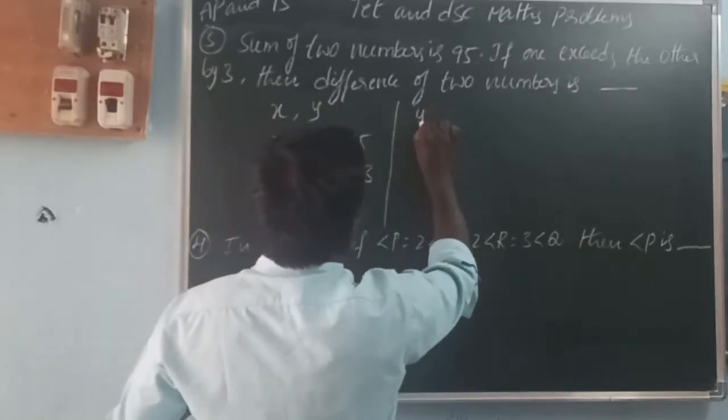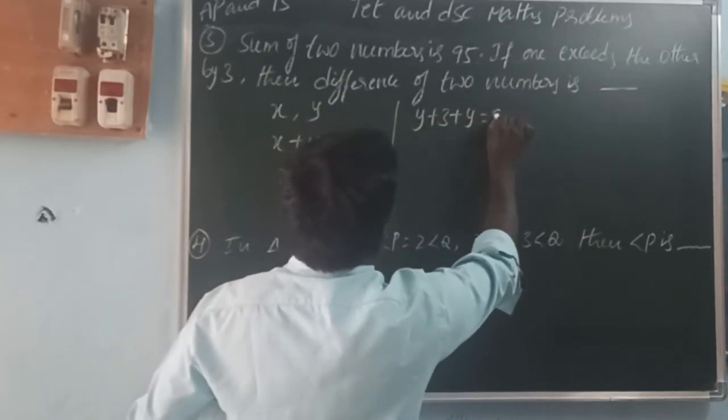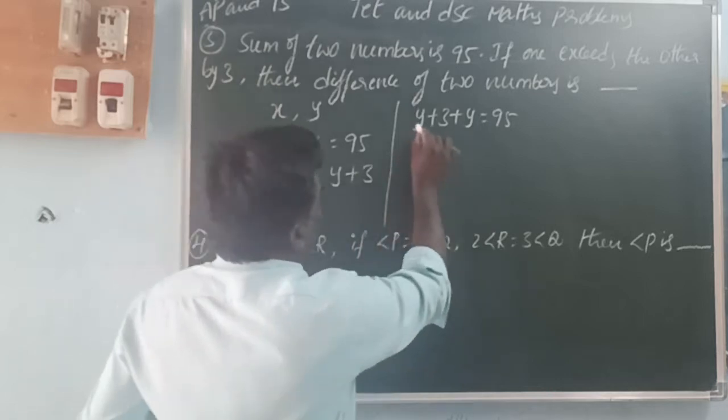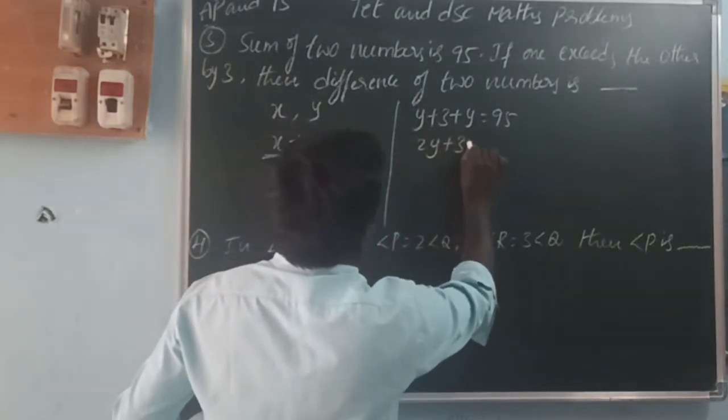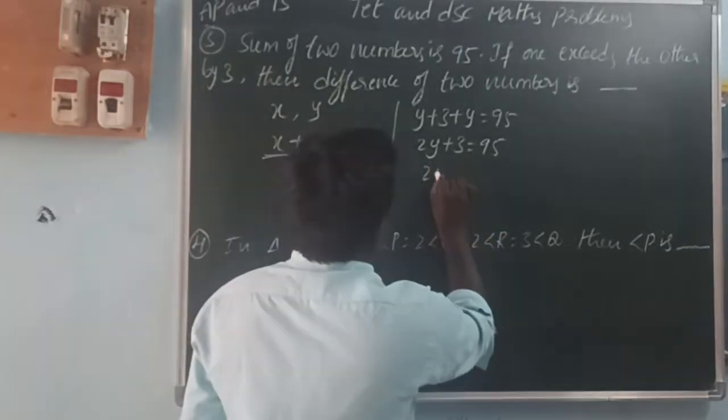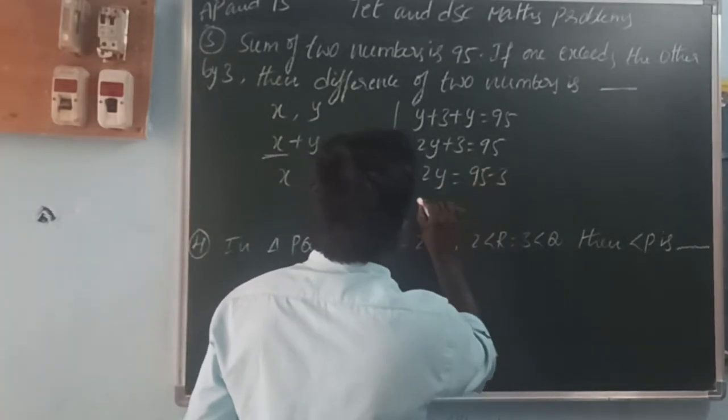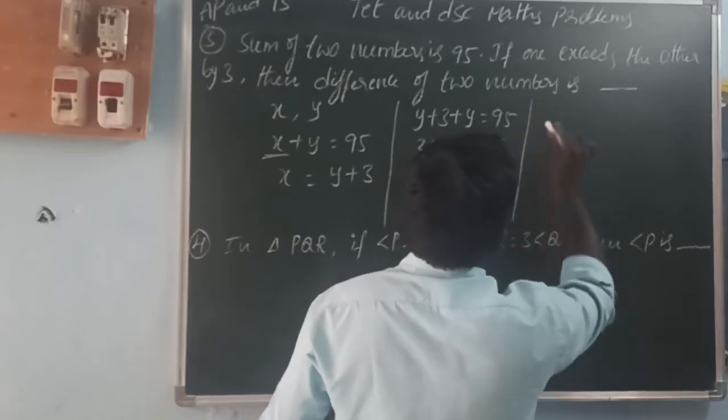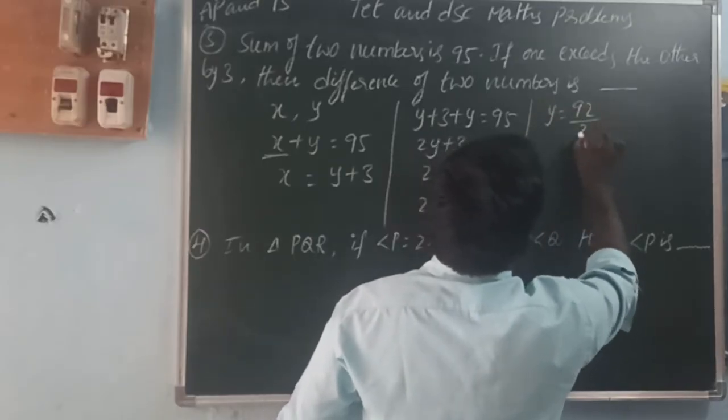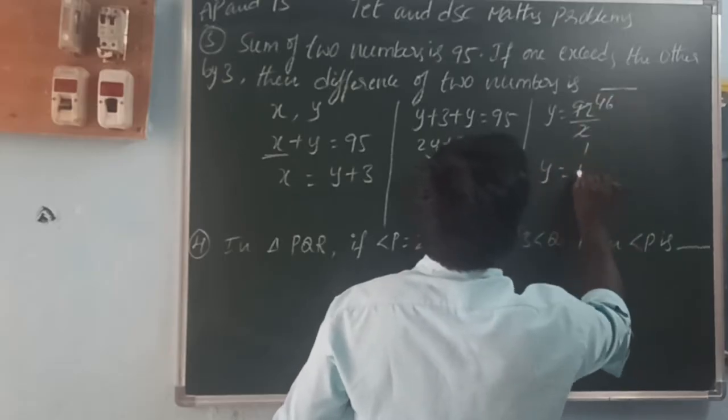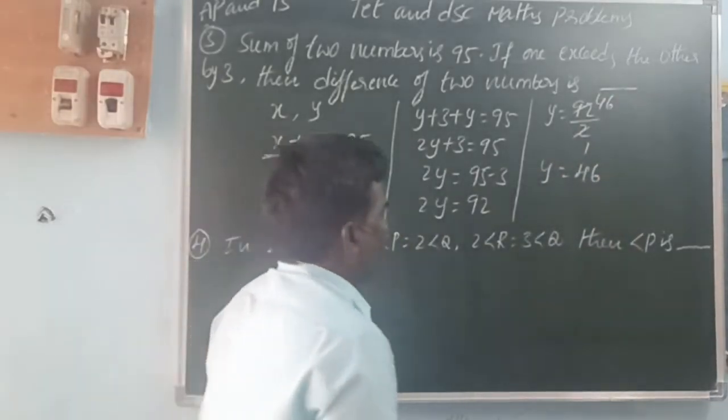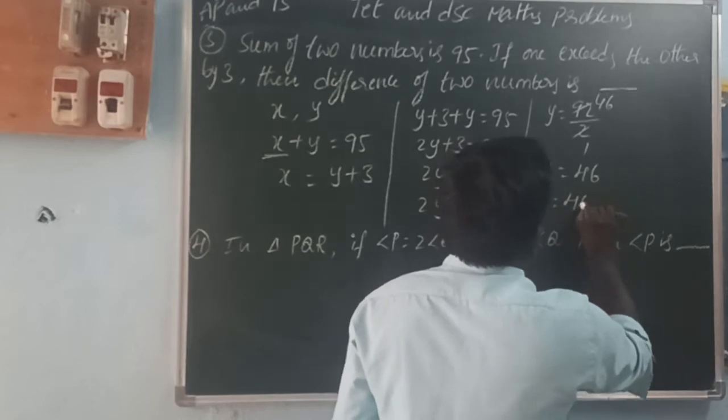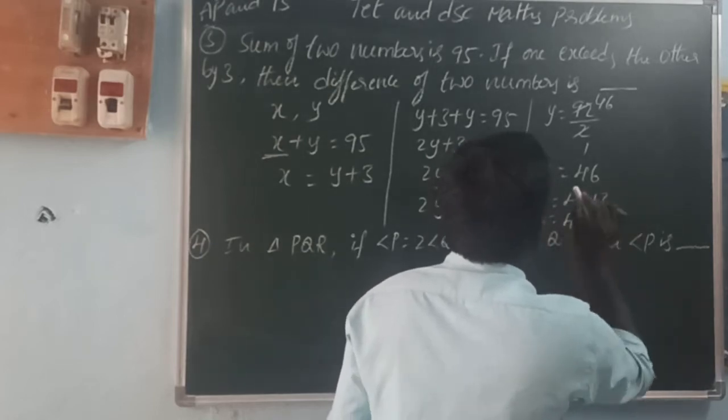Sum of two numbers: x plus y equals 95. If x exceeds y by 3, then x equals y plus 3. So y plus y equals 2y, giving us 2y plus 3 equals 95. Therefore 2y equals 95 minus 3, which is 92. So y equals 92 divided by 2, which is 46. And x equals 46 plus 3, which is 49.